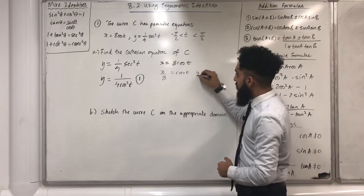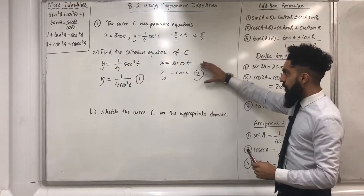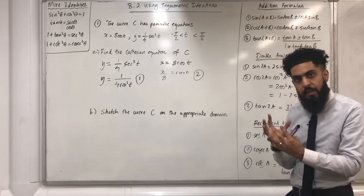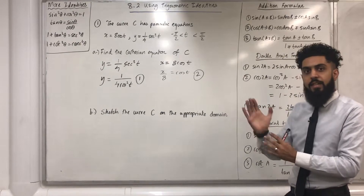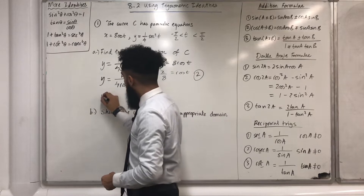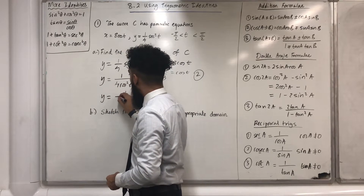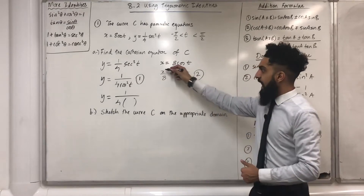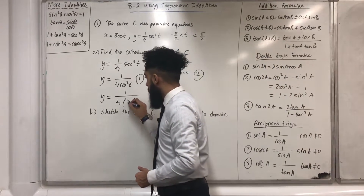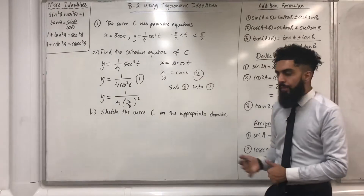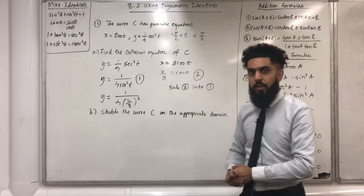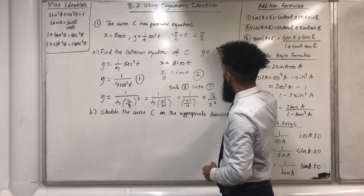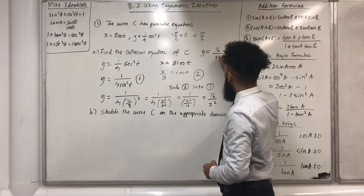This one over here is equation 2. I can substitute equation 2 into equation 1, and by doing that it will eliminate t, hence connecting y and x. So I've got y equal to 1 over 4, and cos(t) is just x over 8, squared. All I need to do is simplify this, and my Cartesian equation is y equals 16 over x².